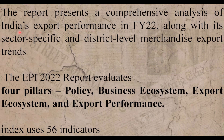Along with that, the index provides sector-specific and district-level information — what goods and services are available and how they perform at the district level. This report is based on four pillars: policy, business ecosystem, export ecosystem, and export performance. The index uses a total of 56 indicators across these four categories.